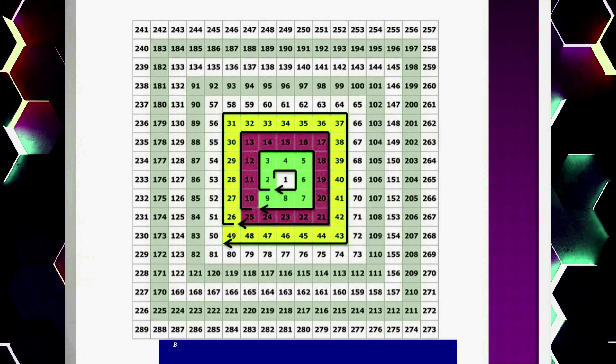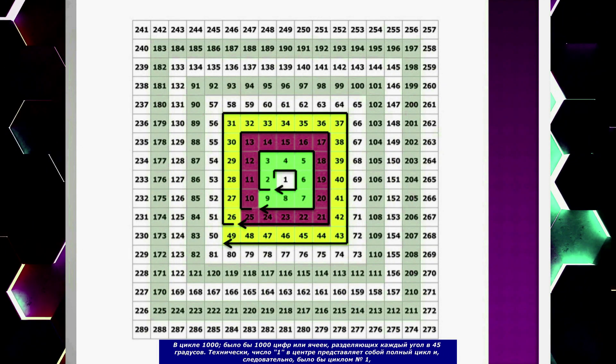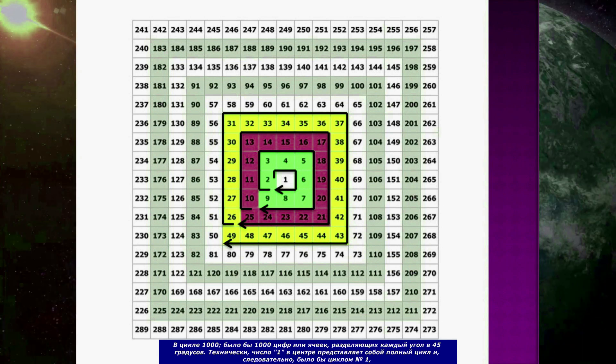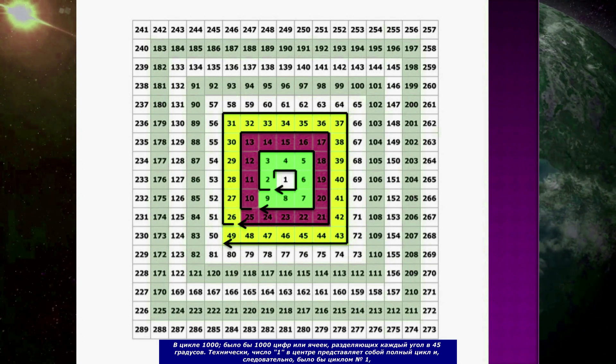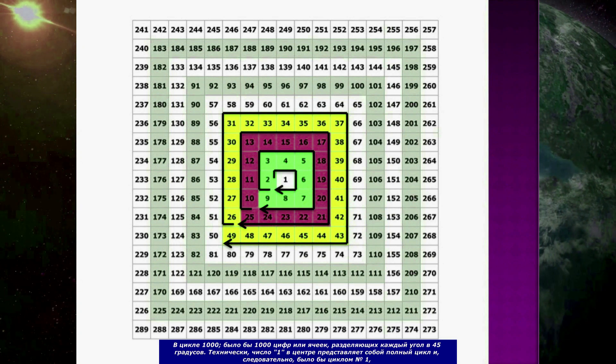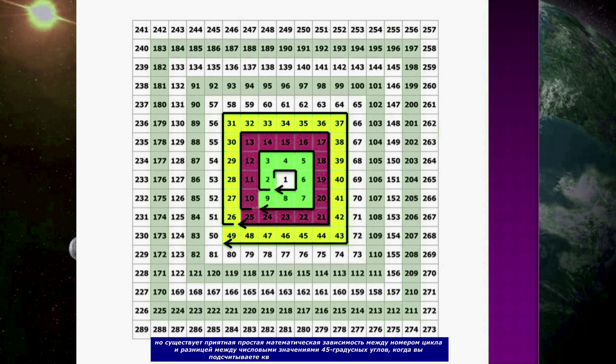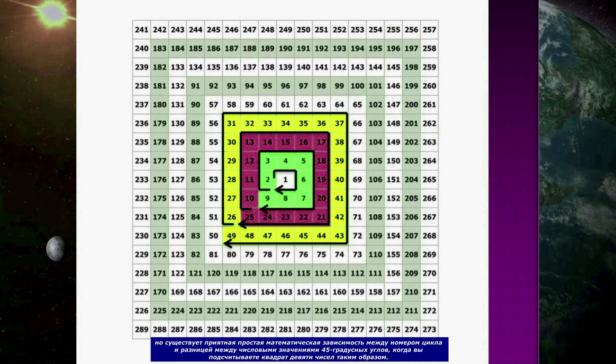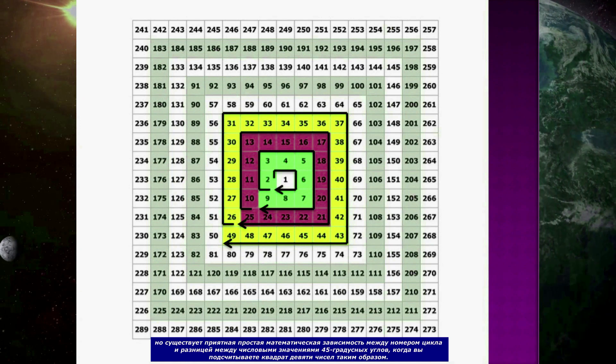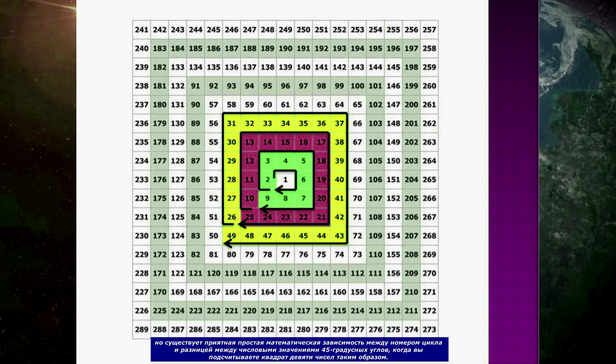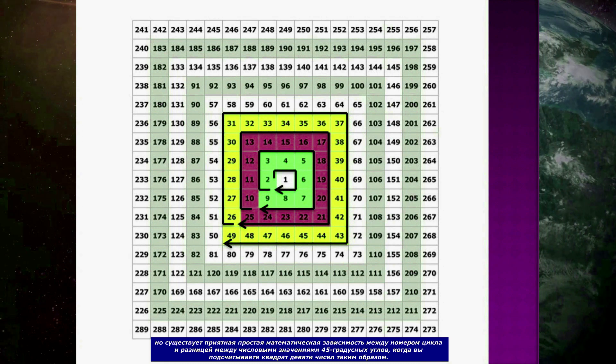In cycle 1000, there would be 1000 digits or cells separating each 45 degree angle. Technically, the number 1 in the center is a complete cycle and would therefore be cycle number 1, but there is a nice simple mathematical relationship to the cycle number and the difference between numerical values of the 45 degree angles when you count the Square of 9 numbers in this manner.